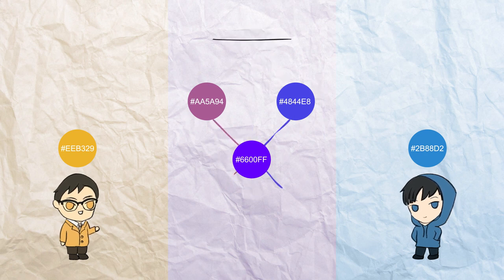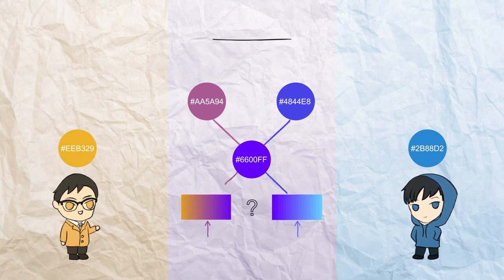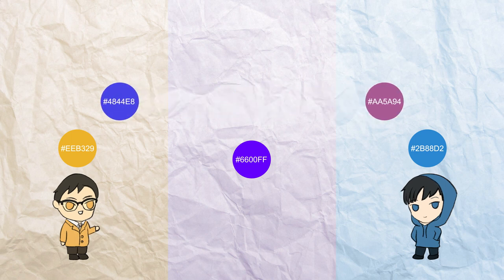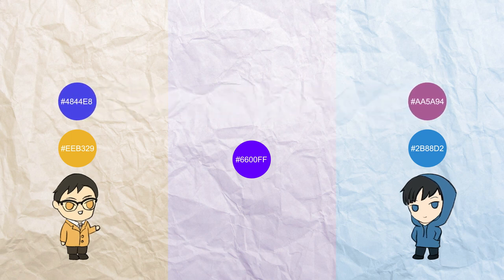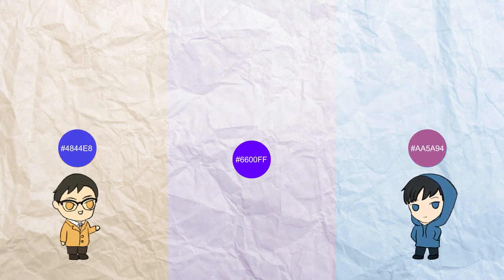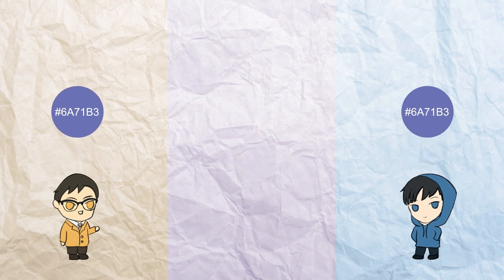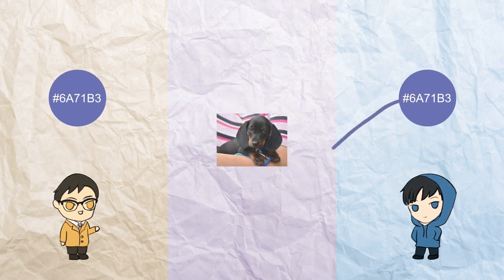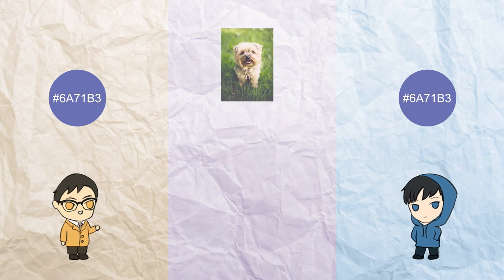A spy will have no way of finding the exact colour of Charlie or Derek with the mixed colour and public space colour. Finally, Charlie and Derek can add their own colour into the new mix they received, and get the same coloured mixture. This is the secret key that they now share and use to exchange pictures of puppies in secret. Everyone's happy.